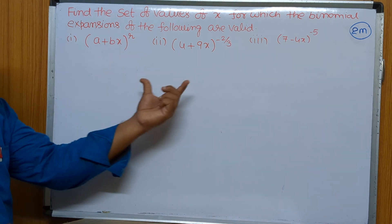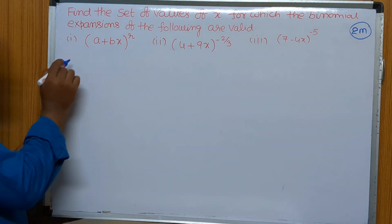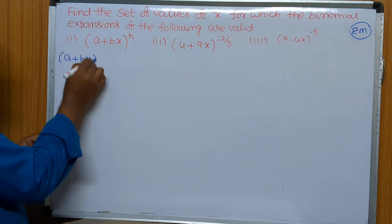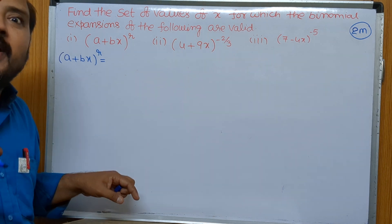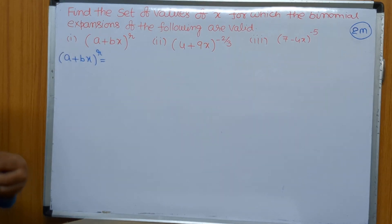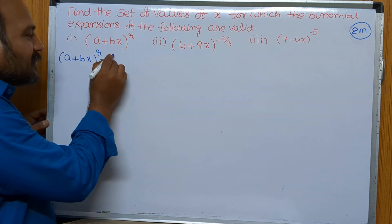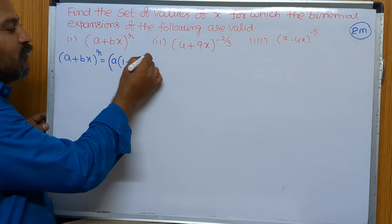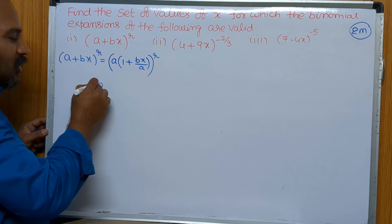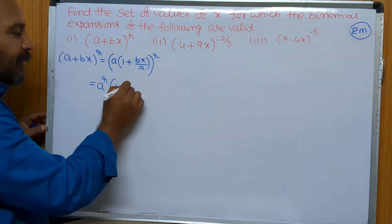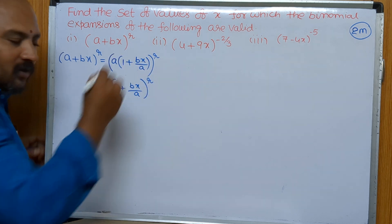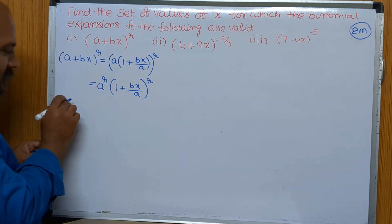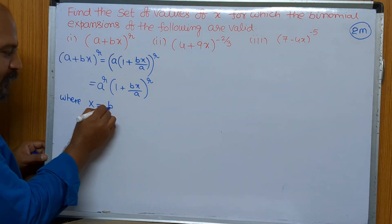By using the first question, similarly other questions we are going to do. So in the first question the given expansion is (a + bx)^r. This expansion we have to write in the form of (1 + x)^r. What I am doing is taking 'a' common, so it comes as a^r into (1 + bx/a)^r. This bx/a value I am taking as capital X, where capital X equals bx/a.